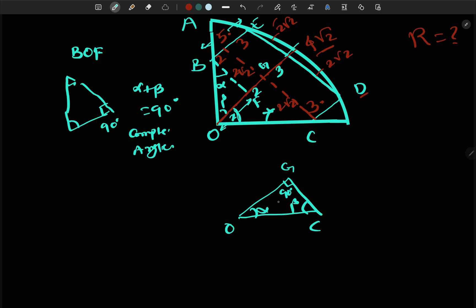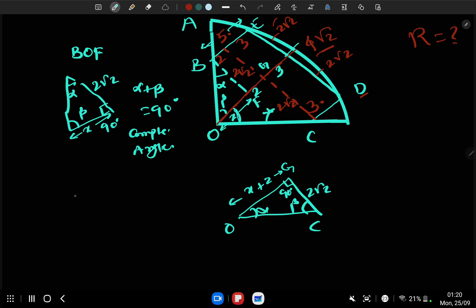Here we have x plus 2, here we have 2√2. For OBF, what we have here is 2√2. Here we have x. And here we have beta angle, here we have alpha angle. Just have a look at these two triangles.